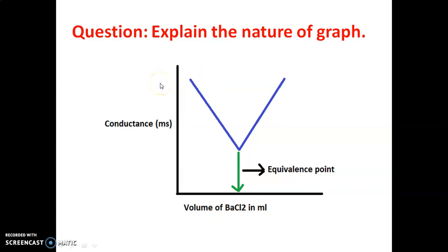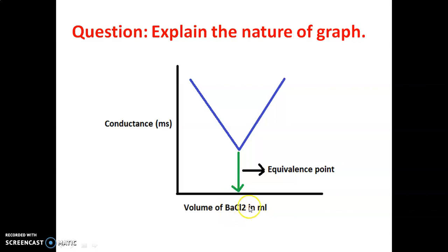Initially, what we are taking in the beaker is zinc sulphate solution. This zinc sulphate solution is in the ionic form as Zn2+ and SO4 2−. More ions means more mobility, and more mobility means more conductance. Hence, initially, the conductance is very high without addition of barium chloride because the solution contains free ions, Zn2+ and SO4 2−. After addition of barium chloride, the conductance decreases because the reaction takes place between barium chloride and zinc sulphate.